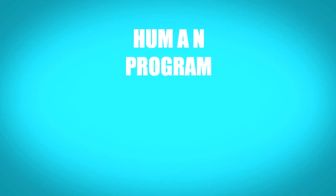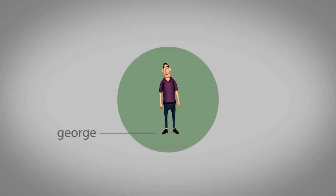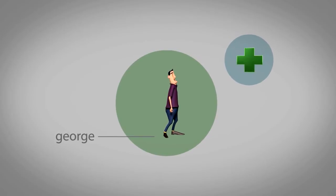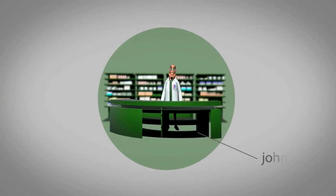Let's witness now the procedure step by step. At first, we introduce you to George. George is a patient and at this very moment he is visiting his pharmacist in order to get Humira. This is John, his pharmacist.